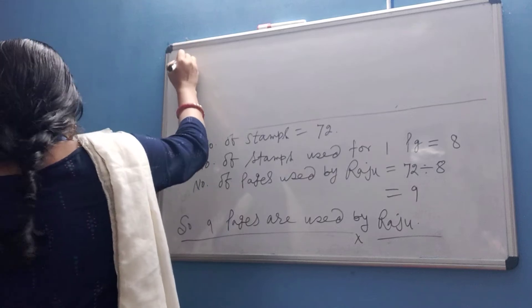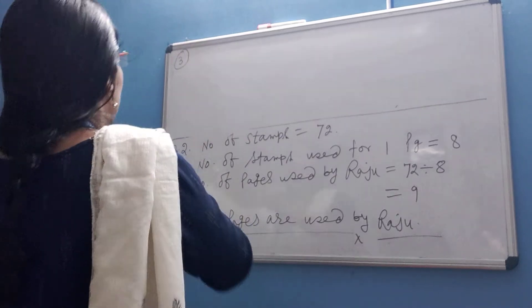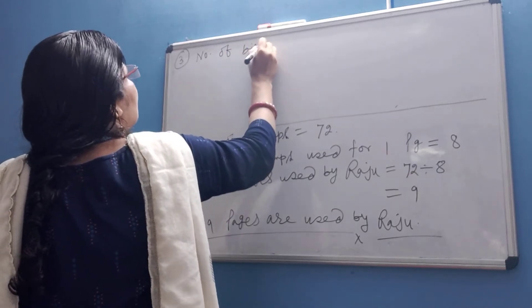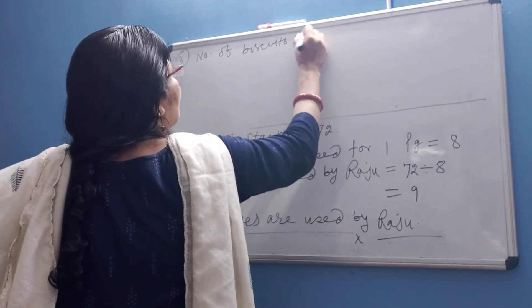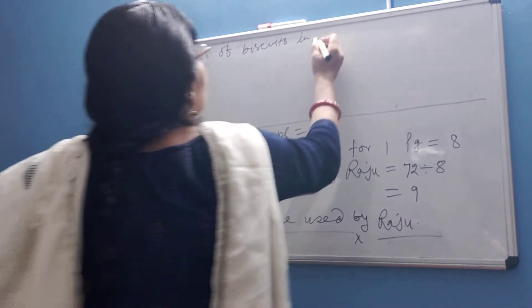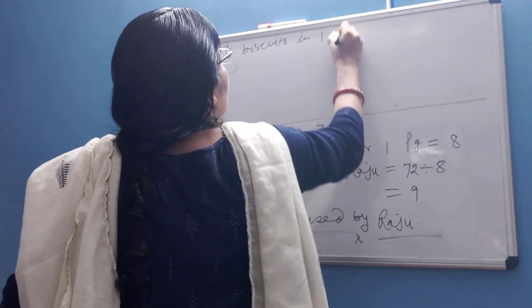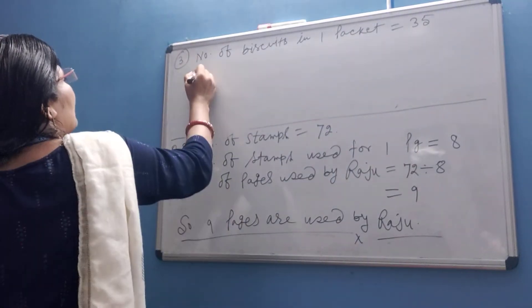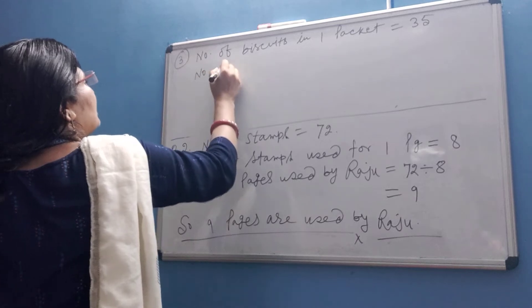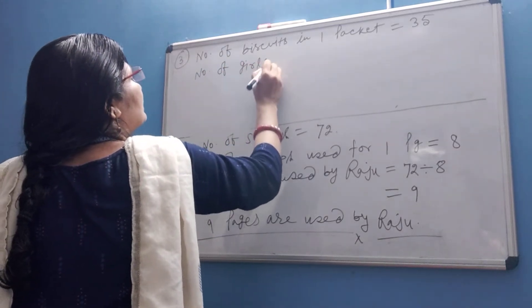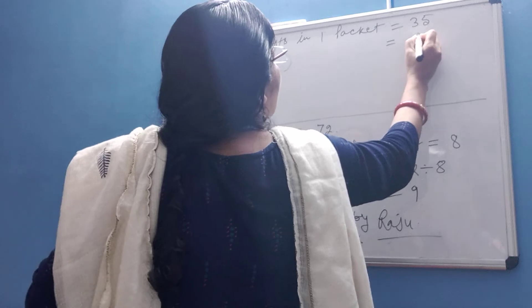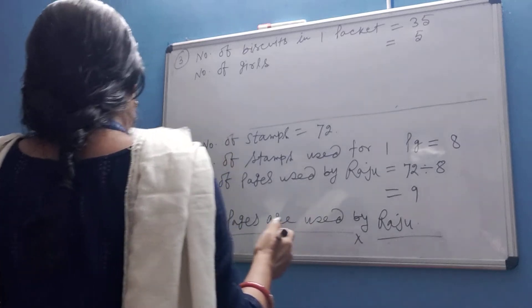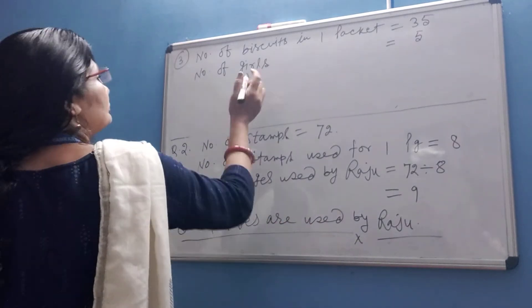Number of biscuits in one packet is equal to 35. Number of girls is equal to 5. How many biscuits will each get?